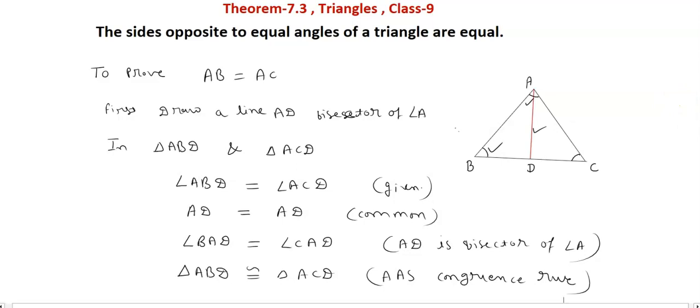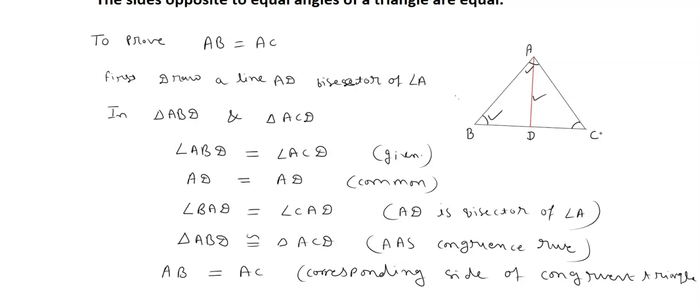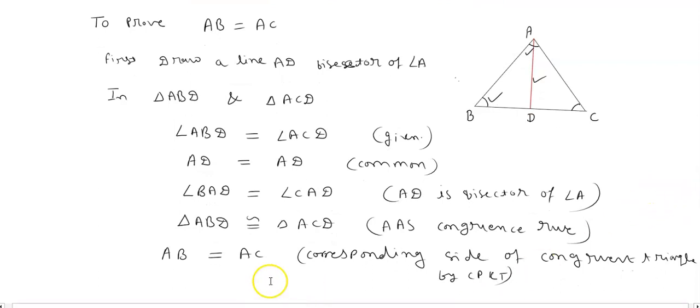These two triangles are congruent. Now we have to prove AB and AC. These sides are corresponding sides of congruent triangles. AB is equal to AC by CPCT. And this is what we have to prove in this theorem. So it is proved.